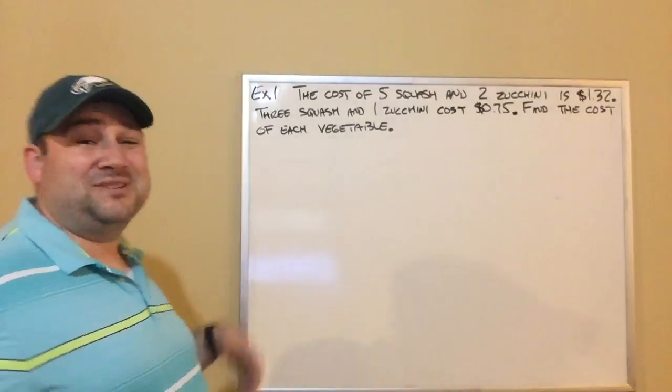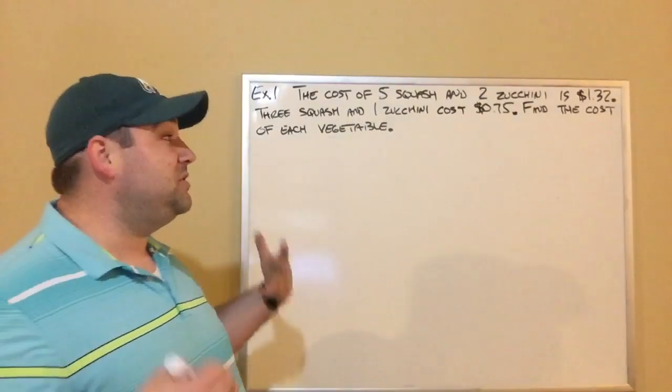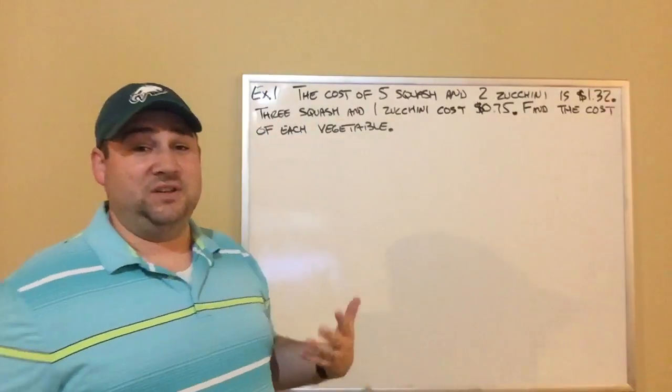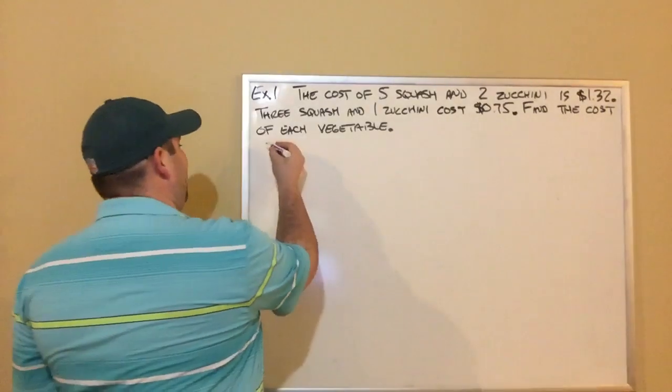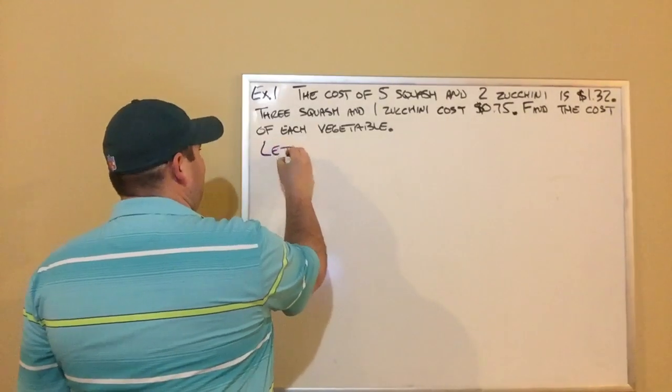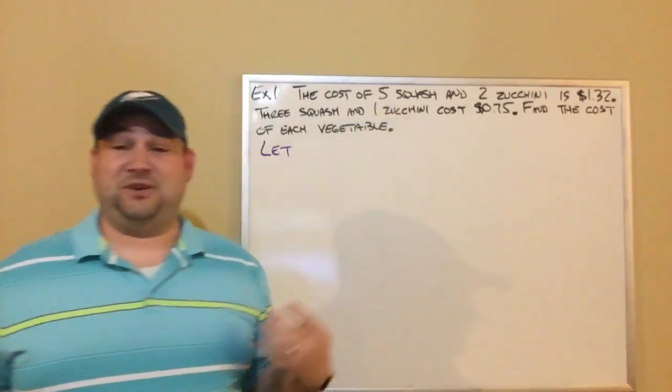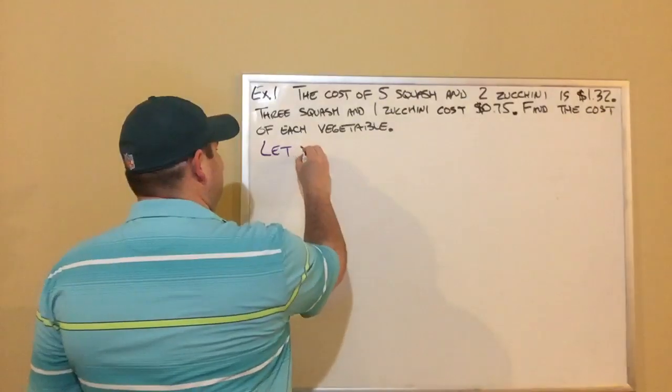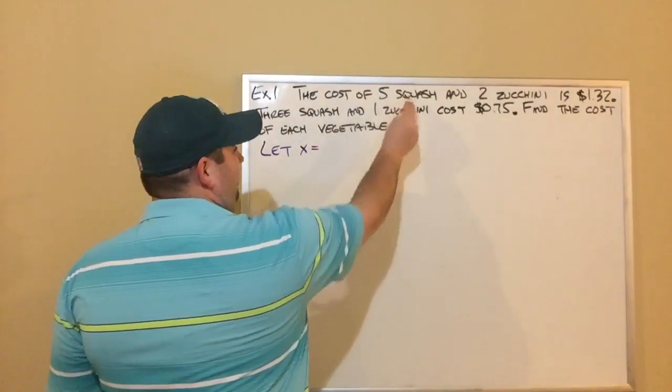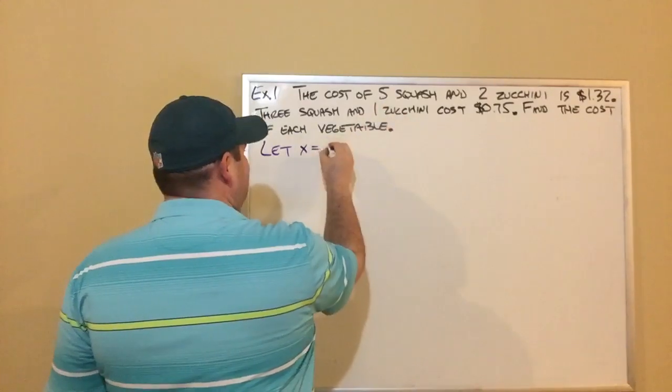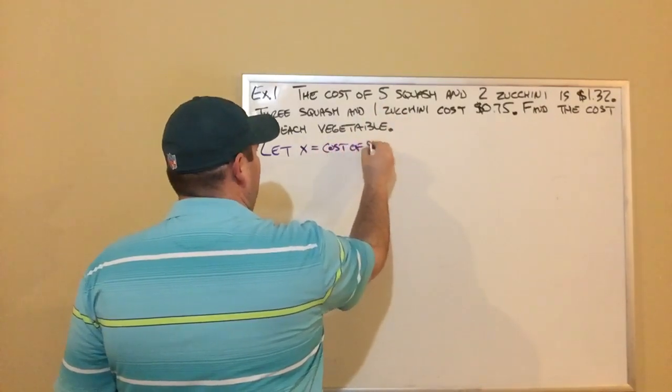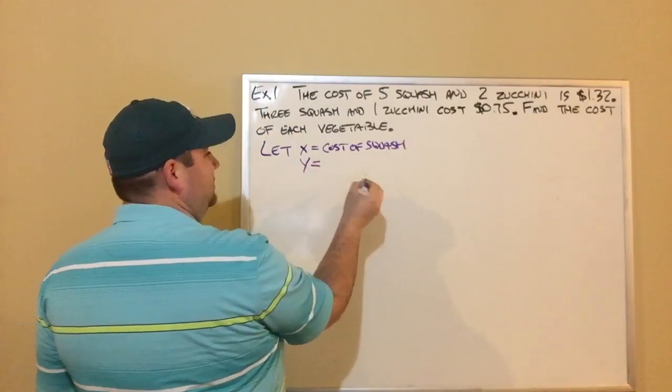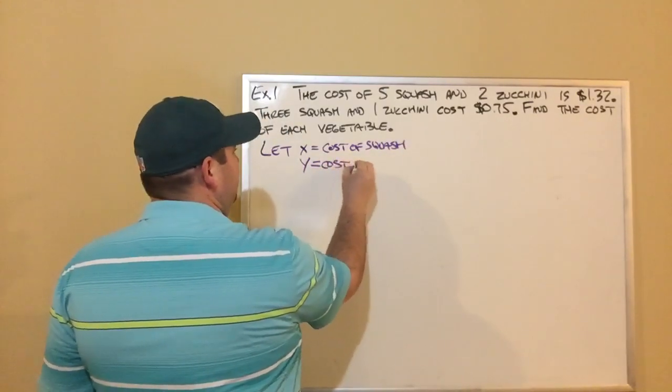So the first thing I got to do is define my variables. There's two things I don't know. Typically, the question is going to be asking what you don't know. I don't know the cost of each vegetable. So you could use any letter. In this case, using S for squash and Z for zucchini might get confusing between twos and fives. I'm just going to use X and Y. So we're going to let X equal the cost of squash and Y will be the cost of zucchini.